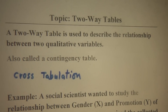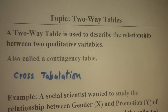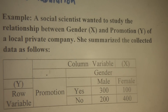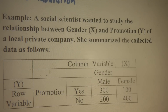Also called a cross-tabulation. For example, to understand what a two-way table is and what we can use it for, let's look at the following example. A social scientist wanted to study the relationship between gender, which we call X, and promotion status, Y, of a local private company. She summarized the collected data as follows.